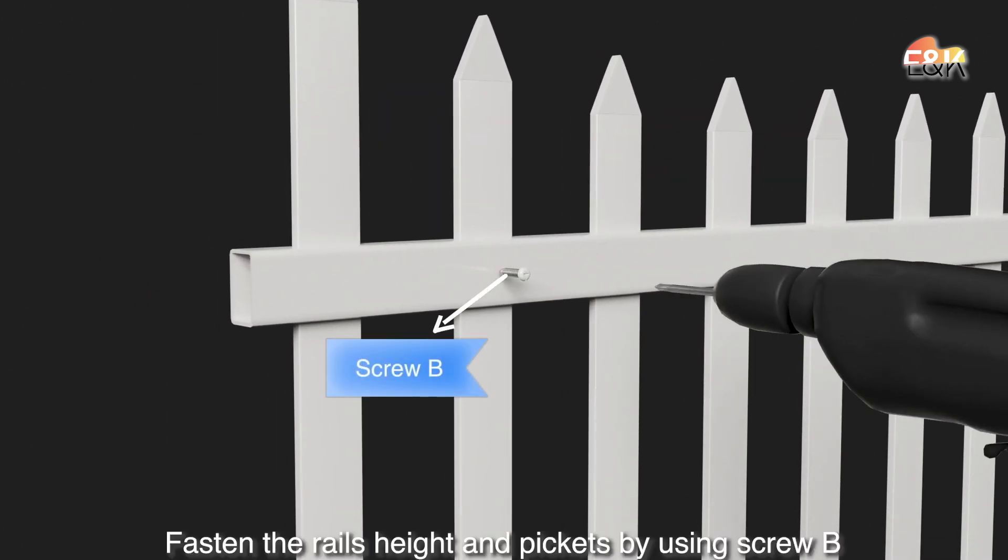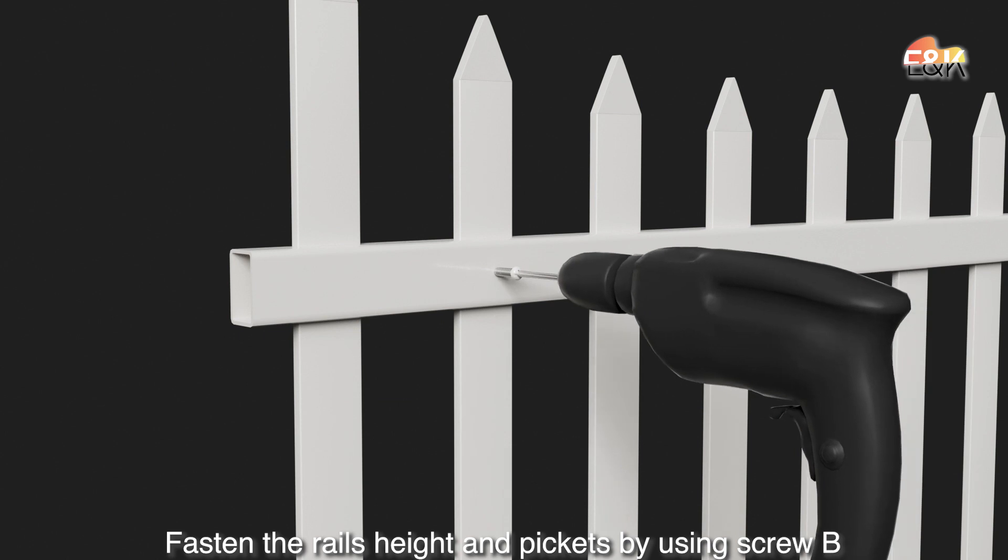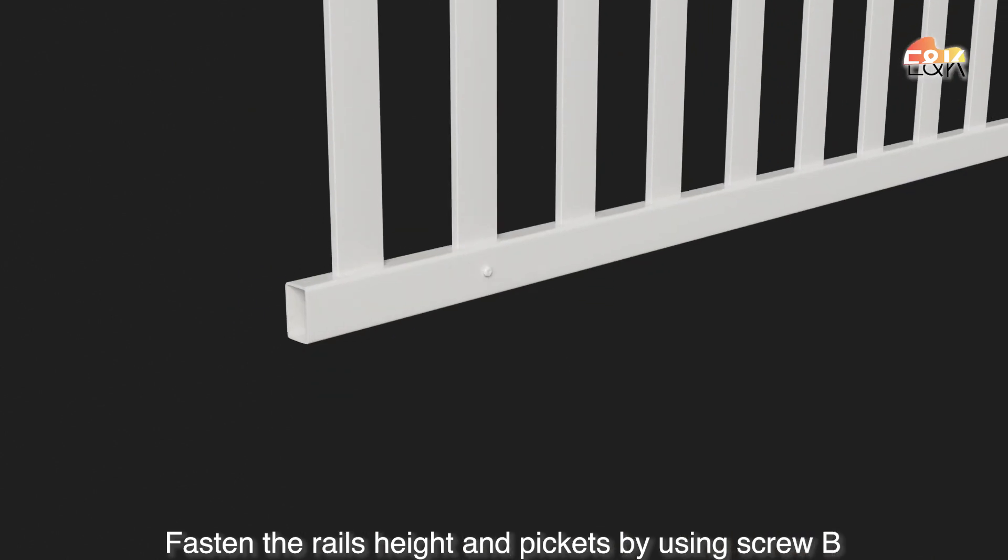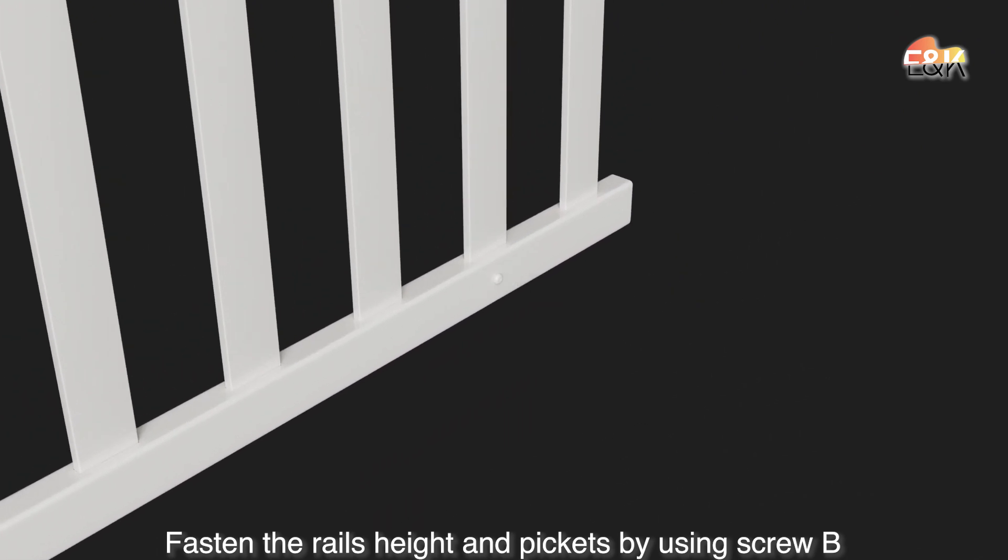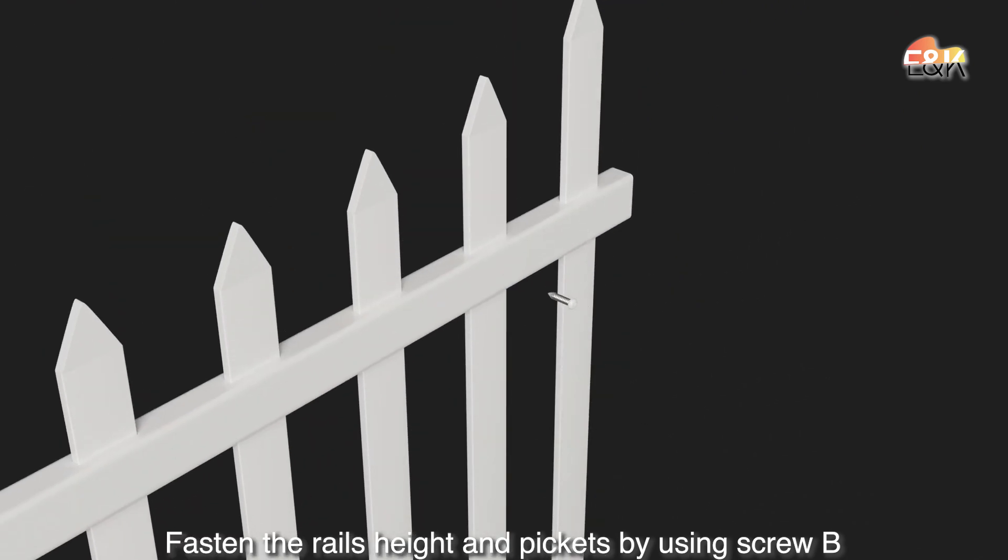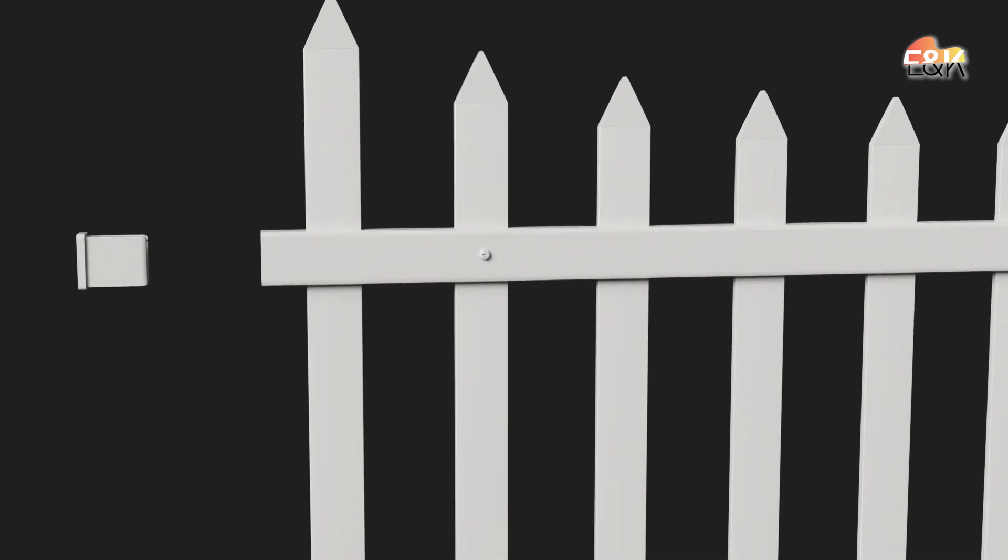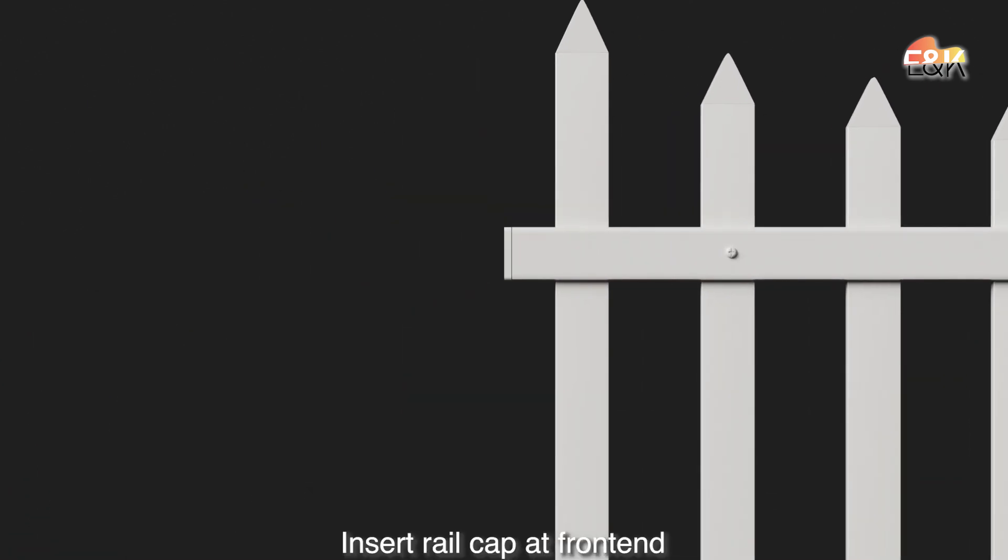Fasten the rail's height in pickets by using screw bead. Insert rail cap at front end.